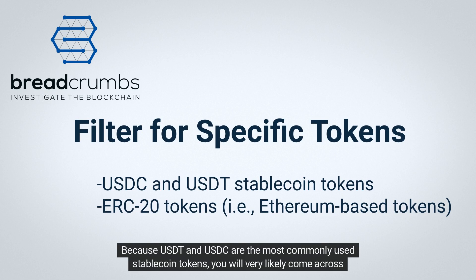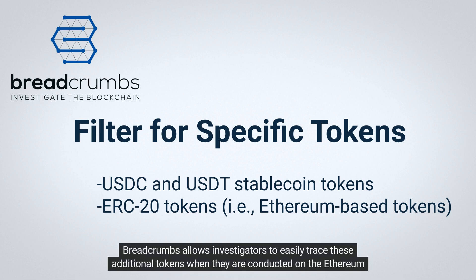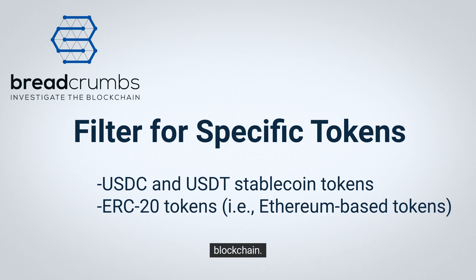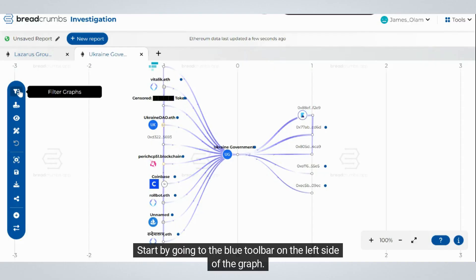Because USDT and USDC are the most commonly used stablecoin tokens, you will very likely come across them in your investigations. Breadcrumbs allows investigators to easily trace these additional tokens when they are conducted on the Ethereum blockchain.